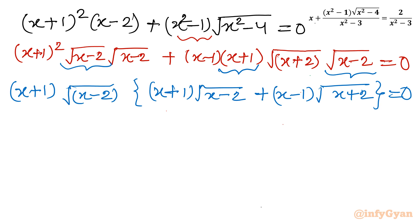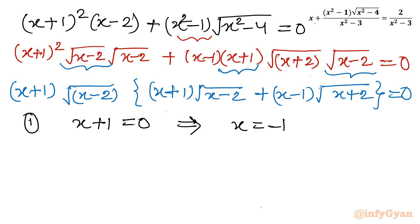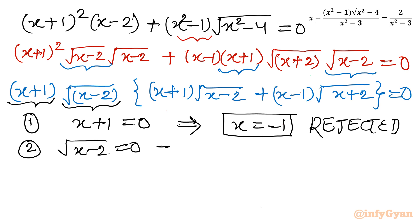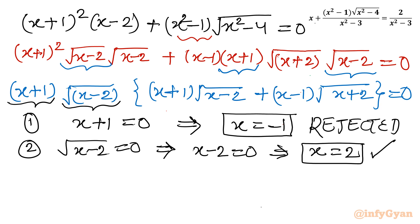Now a·b·c = 0 means either a = 0, b = 0, or c = 0, giving us three equations. First equation: x + 1 = 0, so x = -1. This solution is rejected because our domain requires x ≤ -2 or x ≥ 2, and -1 lies between -2 and 2. Second equation: √(x-2) = 0, squaring gives x - 2 = 0, so x = 2. This is an accepted solution — we'll verify shortly.